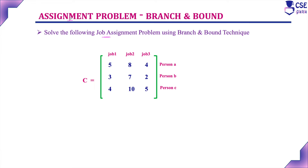What is the job assignment problem? The job and person will be given in a matrix form. Here, each job is assigned to one person such that the constraint is the total cost of completing the job should be minimum. That is the job assignment problem, and we are going to implement it using branch and bound technique by constructing the state space tree.